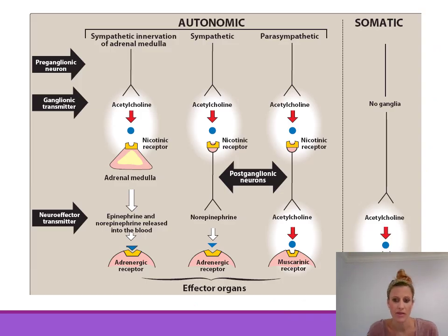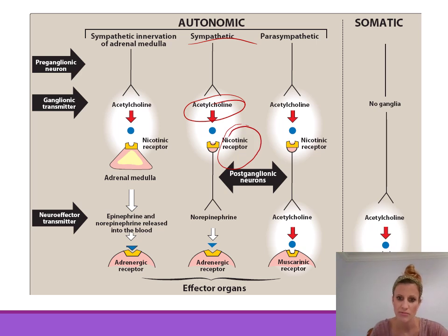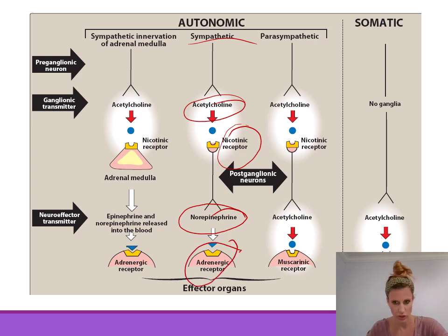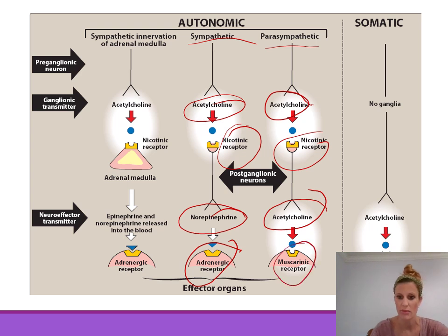Here you can see the levels of innervation in the autonomic nervous system — the neurotransmitter used and the receptor used at both preganglionic and postganglionic synapses. The sympathetic nervous system utilizes acetylcholine at its ganglionic synapse, binding to nicotinic receptors. The postganglionic neuron utilizes norepinephrine, binding to an adrenergic receptor, either alpha or beta. The parasympathetic nervous system utilizes acetylcholine binding to a nicotinic receptor at the ganglia, and then the postganglionic synapses utilize acetylcholine binding to a muscarinic receptor.